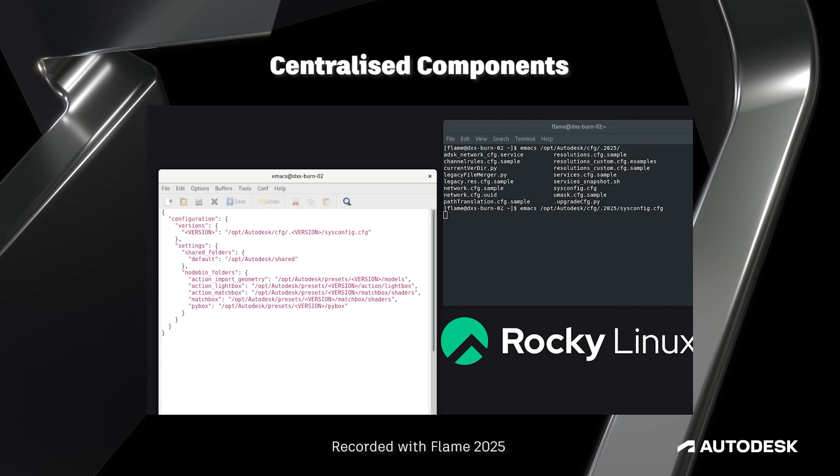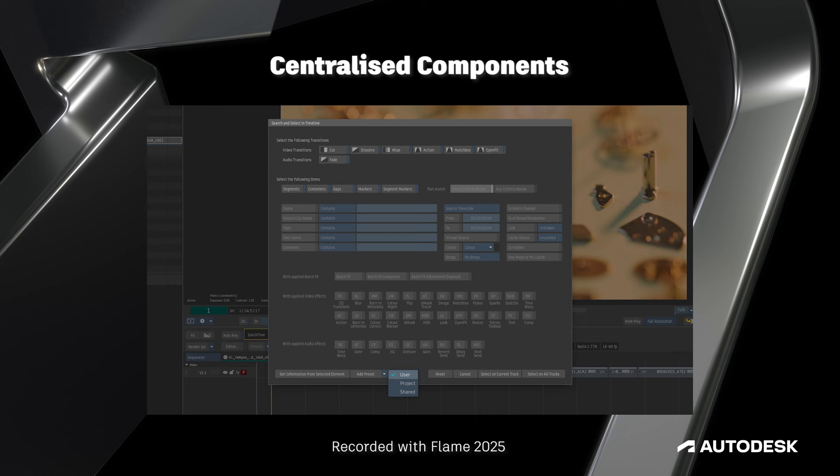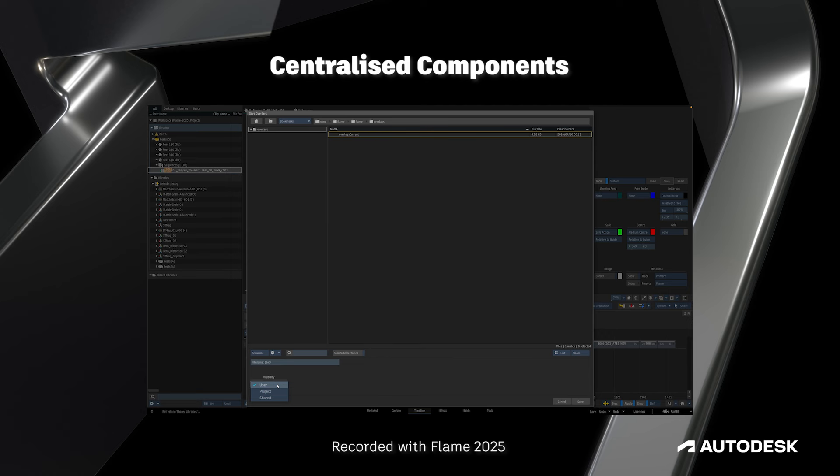Flame 2025 also introduces the notion of centralized components, which gives system administrators new ways to deploy shared presets, Python scripts, and other components across different workstations. Combined with new preset functionality to areas of Flame that didn't use presets before, this makes for some fantastic efficiencies with how we share different components across a facility.